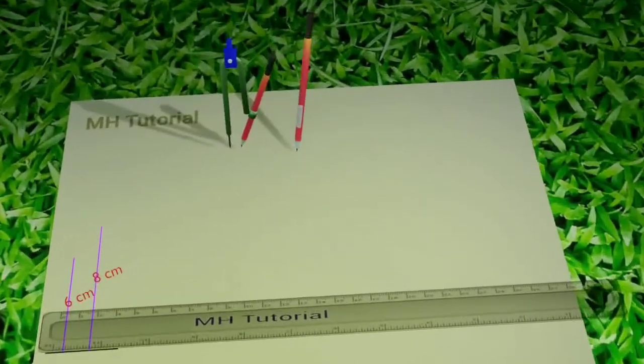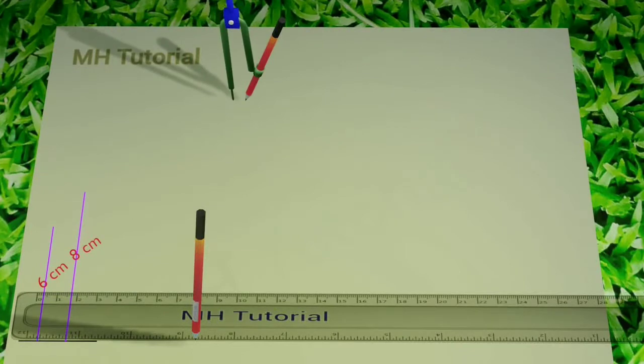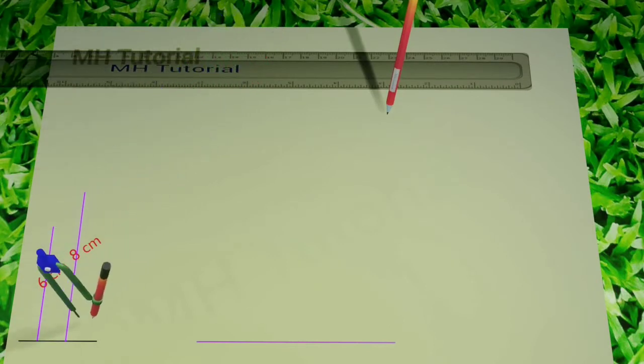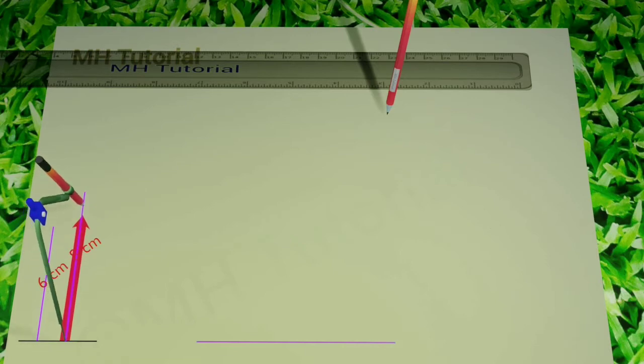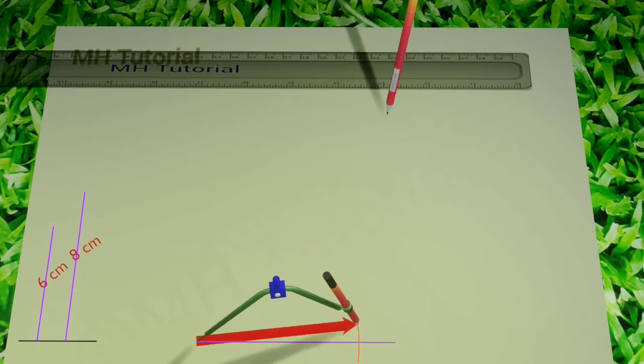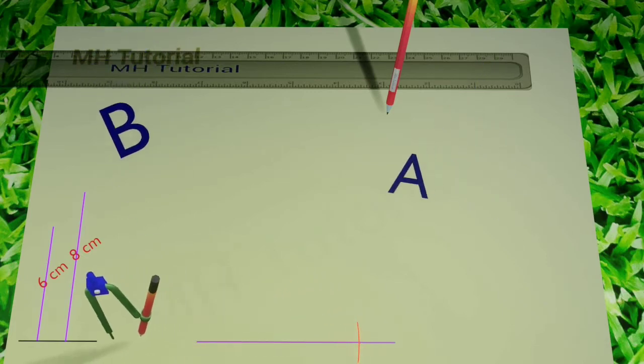Then a large line segment of any length is drawn in the middle of the page. After that, length of 8 cm is taken with the help of a compass. That length is subtracted from the middle segment. This part is named AB.